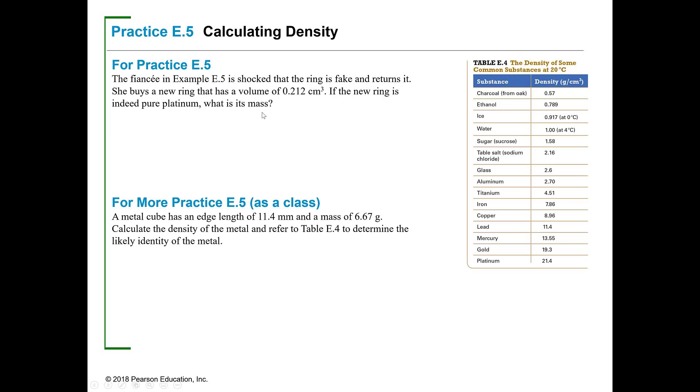In the for-practice problem, she's shocked that the ring is fake and returns it. She buys a new ring, and the new ring has a volume of 0.212 cubic centimeters. If the new ring is platinum, what would be the mass? The mass this time is what I'm wondering. What's that other piece of information that I know? I know the density should be 21.4 grams per cubic centimeter. If d equals m over v, then m equals d times v.